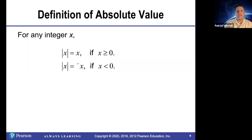This is a more formal definition of absolute value. For any integer x, the absolute value of x is equal to x if x is greater than or equal to 0. In other words, if x is positive or 0, then the absolute value of x is just x.